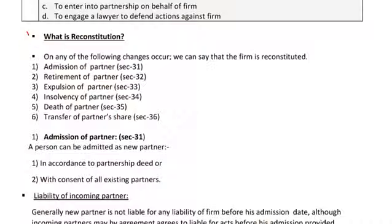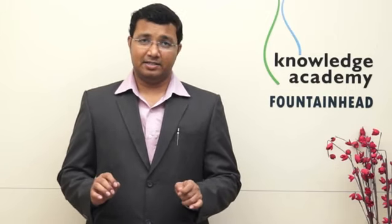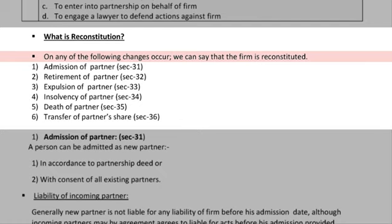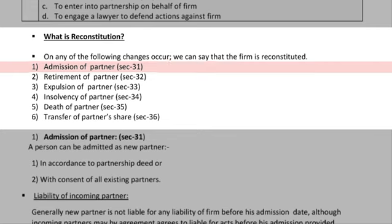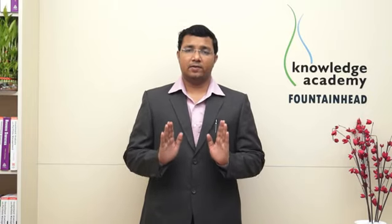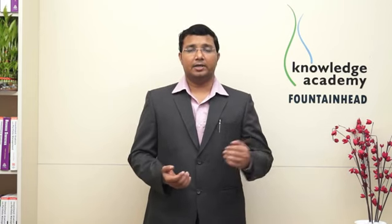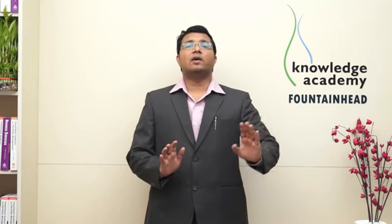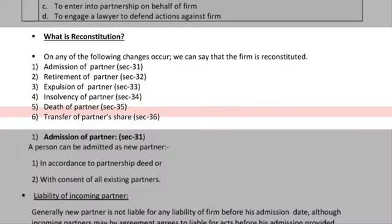Now let us start with the new topic: reconstitution. Constitution is the first time; when there is some change later on, it is reconstitution — like restart versus start. Any of the following changes result in reconstitution of the firm: Section 31 for admission, Section 32 for retirement, Section 33 for expulsion. Retirement means a partner going out of the firm with his own will; expulsion is by force. Section 34 covers insolvency of partner, Section 35 is death of partner, and Section 36 is transfer of partnership share.